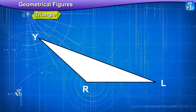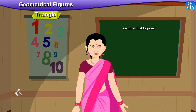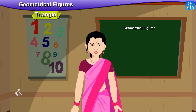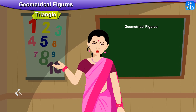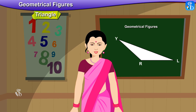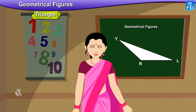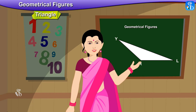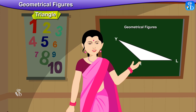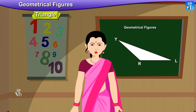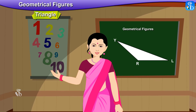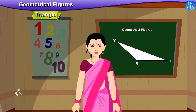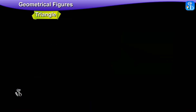Triangle — 'tri' means 3. Triangle means a figure having 3 angles. This figure is a triangle. In this figure we can see 3 sides and 3 vertices. Triangle means 3 angles as well as 3 sides.